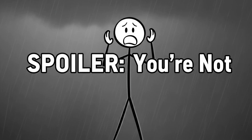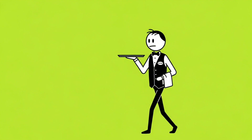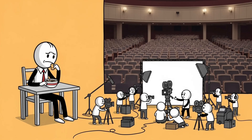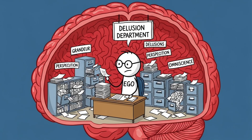Your brain creates this illusion because it assumes you are the main character in everyone else's story. Spoiler: you're not. You're just an uncredited extra in most people's mental movies. So next time you walk into a room feeling like a spotlight's on you, remember — that's not pressure. That's just your brain's camera crew filming a documentary no one else is watching. Basically, your brain's ego runs a full-time delusion department.